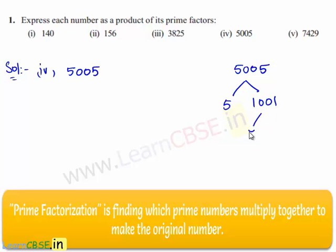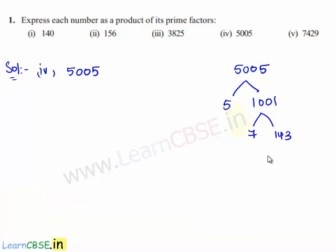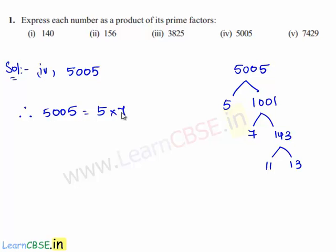1001 can be expressed as 7 times 143, and 143 can be written as 11 times 13. Therefore, 5005 can be expressed as 5 times 7 times 11 times 13. Hence, 5005 is written as a product of its prime factors.